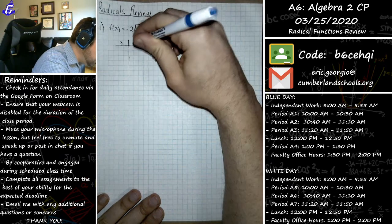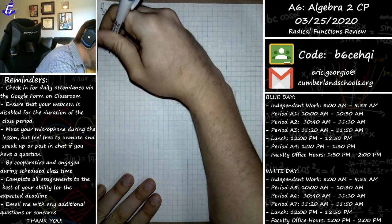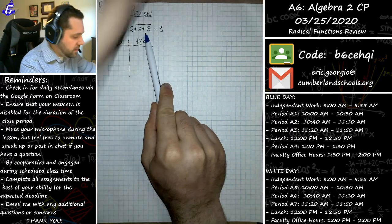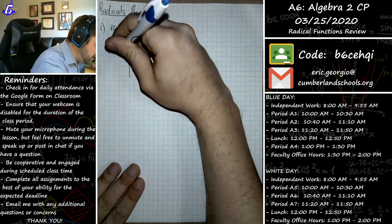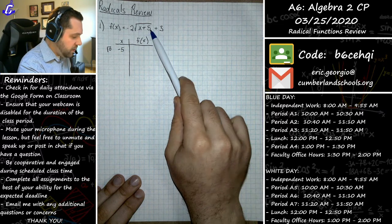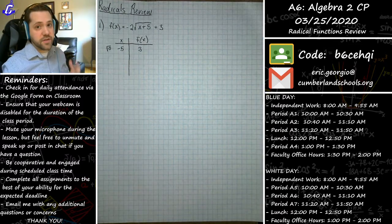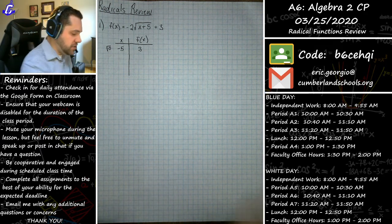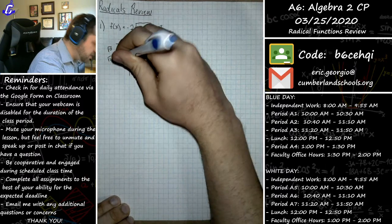The first goal is to take the square root of zero. If I can plug in a number that allows me to take the square root of zero, it makes life easier. The value that does that is negative five, because negative five plus five is zero, the square root of zero is zero, times negative two is still zero, plus three is three. So our starting point is at (-5, 3).